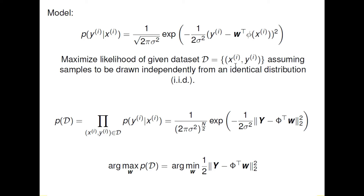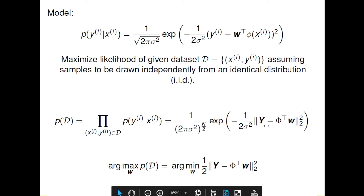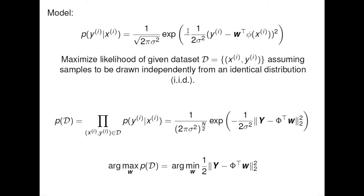Independently means the outcome is not dependent on the previous one — all data samples are drawn independently without past history affecting us. We take the product of these different probabilities, and when we multiply the probabilities of these n data points, all the terms inside the exponential function get added up and we get the same expression as the last slide. This is vector notation: capital Y denotes the vector of outputs, phi is the feature matrix, and w is the weight vector we are trying to find. Our main goal is to maximize this probability.